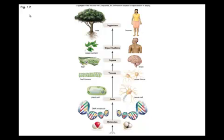We then take those atoms and assemble molecules. Molecules can form very large biological structures called macromolecules — things like DNA, proteins, and lipids. These macromolecules can be assembled to form a cell. In Chapter 3 we'll be looking at cell anatomy and cell physiology. The cell is the lowest level of organization that we consider to be alive, and there are many different types of specialized cells, such as plant cells or nerve cells.